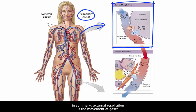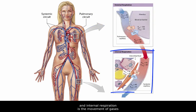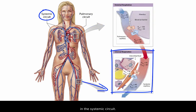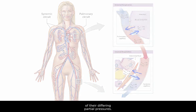In summary, external respiration is the movement of gases in the pulmonary circuit, and internal respiration is the movement of gases in the systemic circuit. Oxygen and carbon dioxide diffuse into and out of blood independent of each other, as a result of their differing partial pressures.